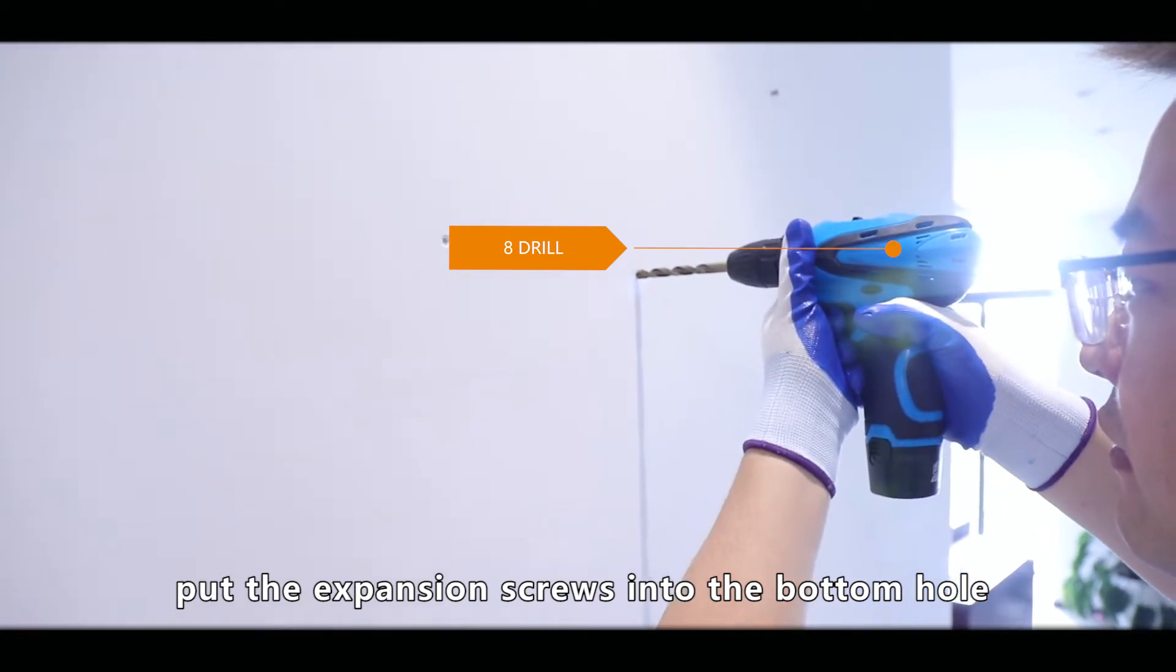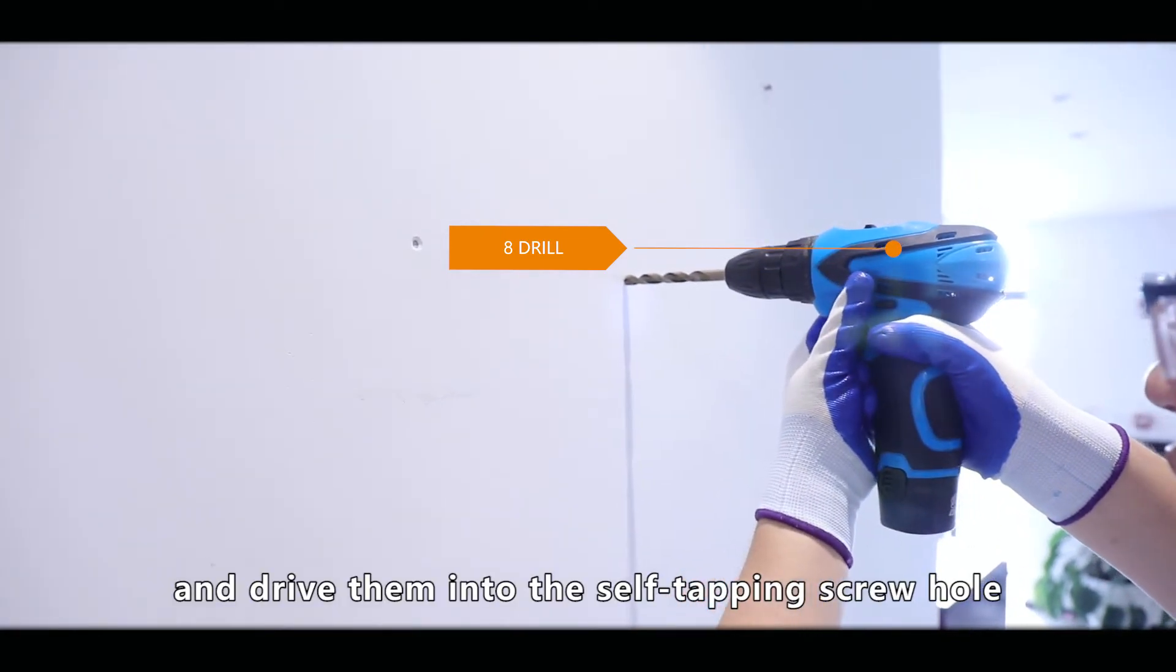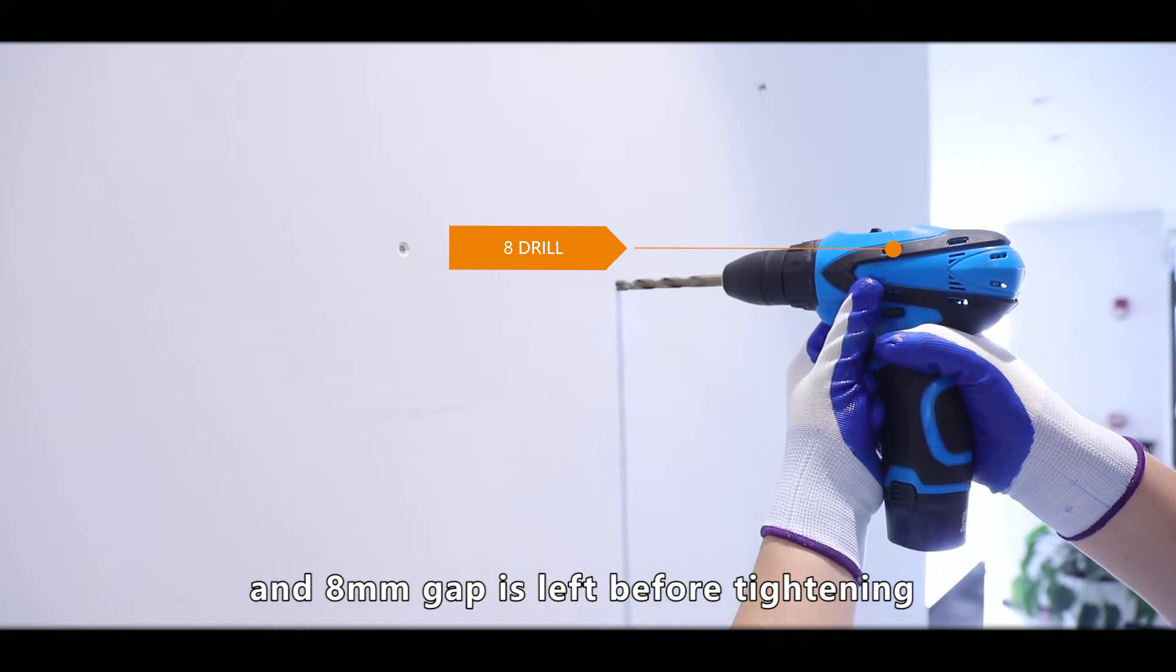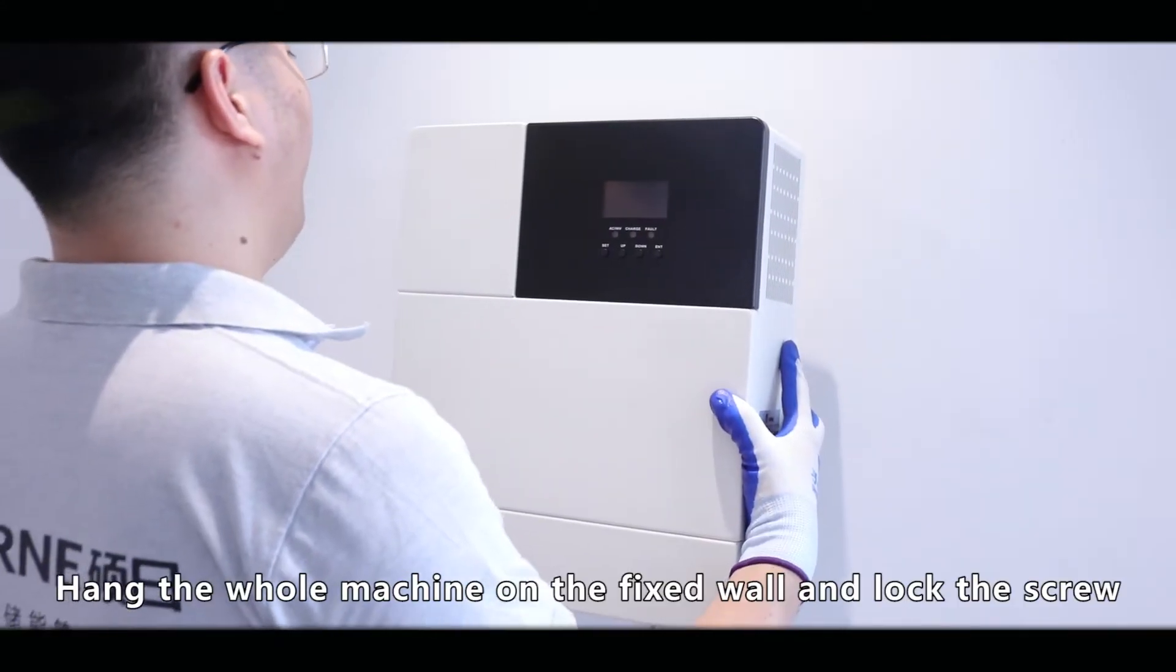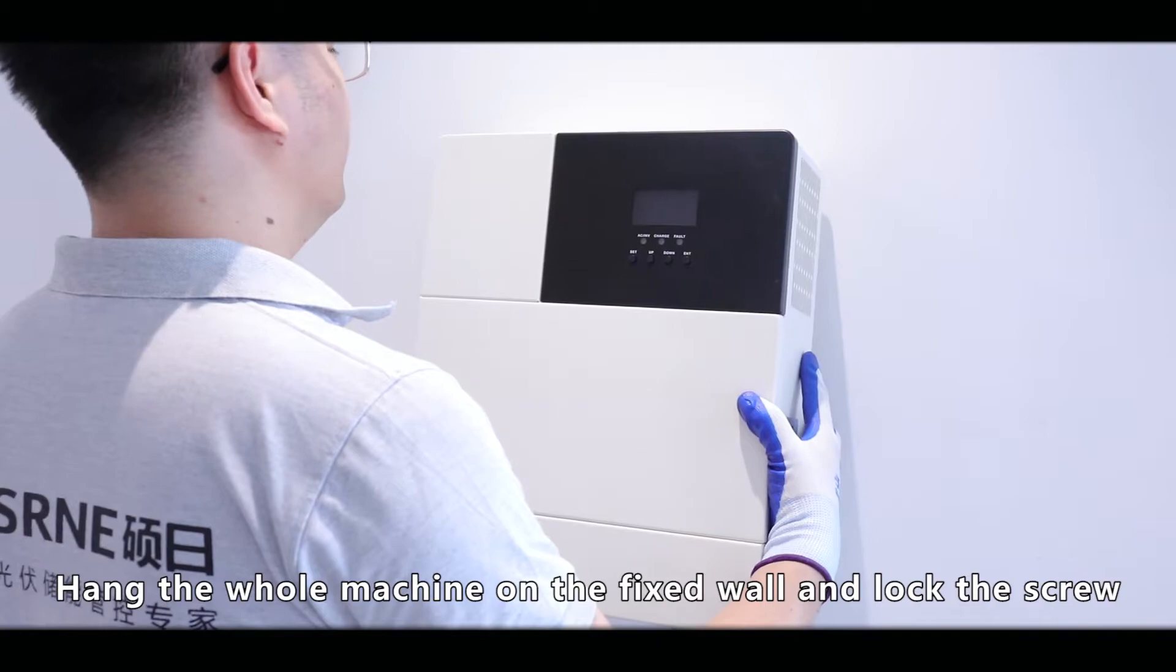Pull the expansion screws into the bottom hole and drive them into the self-tapping screw hole. An 8mm gap is left before tightening. Hang the whole machine on the fixed wall and lock the screw.